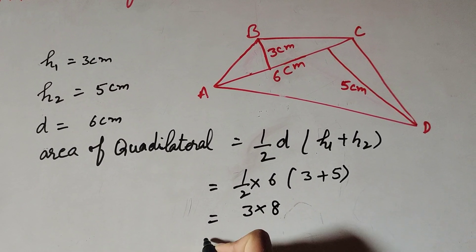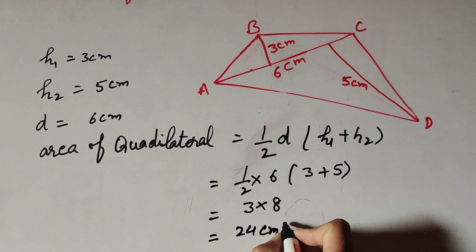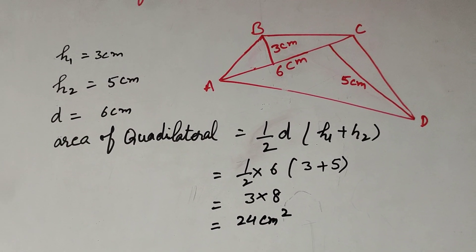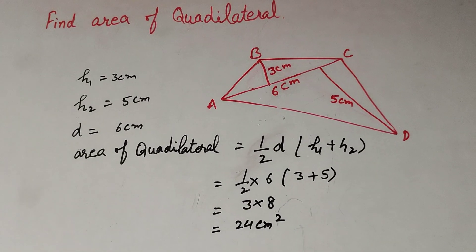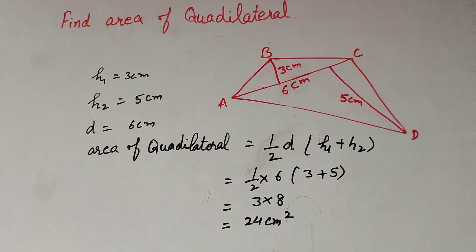3 plus 5 is equal to 8. So 3 multiply by 8 equal to 24 centimeter square. So the area of the given quadrilateral is equal to 24 centimeter square. Thanks for watching. Like, comment, and share my video. Subscribe to my YouTube channel.